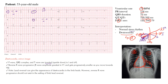You also have reverse R wave progression. Normally, as you go from V1 to V5, you should see an increase in R wave amplitude — an increase in the R-to-S ratio — meaning as you go from right to left, the S waves get smaller and the R waves become dominant.